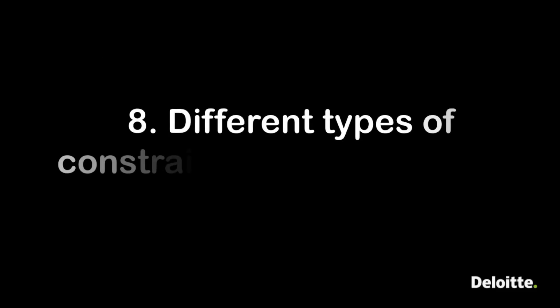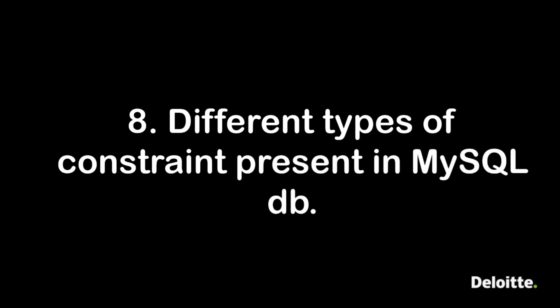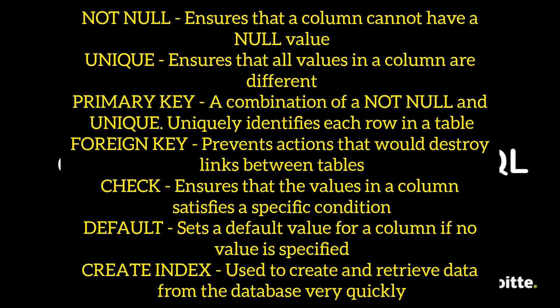Next question: different types of constraints in MySQL. These include NOT NULL (ensures a column cannot be null), UNIQUE (ensures all values in a column are different), PRIMARY KEY (a combination of NOT NULL and UNIQUE that uniquely identifies each row), FOREIGN KEY (prevents actions that would destroy links between tables), CHECK (ensures a value satisfies a specific condition), DEFAULT (sets a default value if none is specified), and CREATE INDEX (used to create and retrieve data from the database quickly).